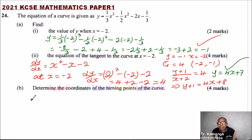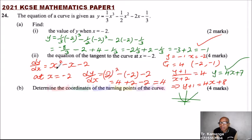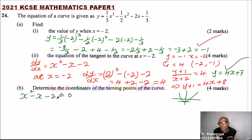Looking at part B: determine the coordinates of the turning point of the curve. The turning point — if we have our curve, this is the turning point. The gradient at the turning point is 0. So it means that since we have the gradient function x squared minus x minus 2 equals 0, we can solve this equation.